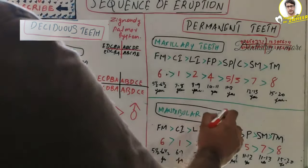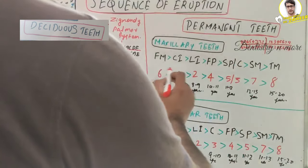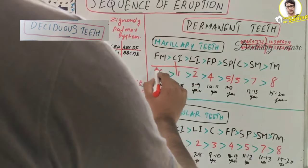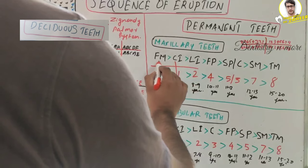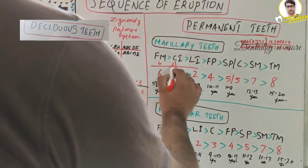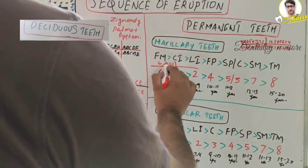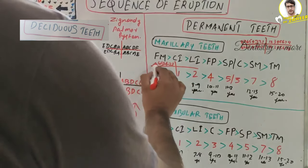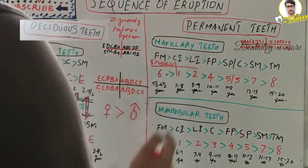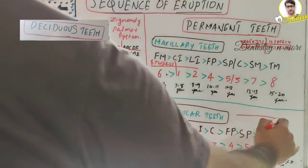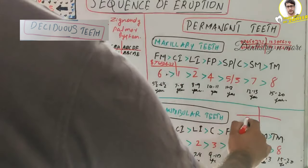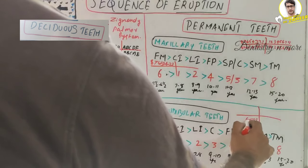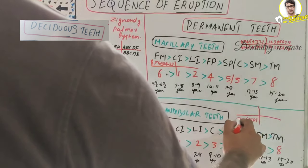In summary, the maxillary permanent eruption sequence is 6, 1, 2, 4, 3, 5, 7, 8 — meaning first molar, central incisor, lateral incisor, first premolar, canine, second premolar, second molar, third molar. The mandibular permanent eruption sequence is 6, 1, 2, 3, 4, 5, 7, 8 — where the canine erupts before the premolars, unlike the maxilla.